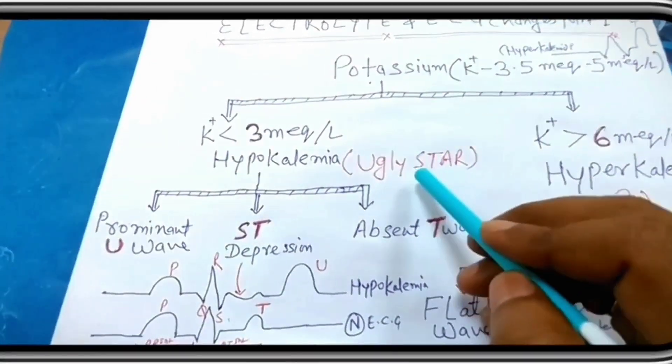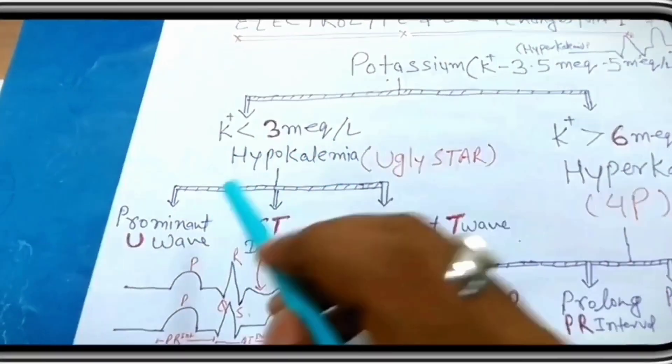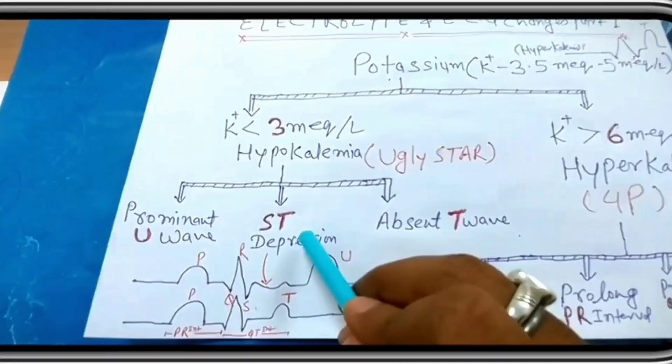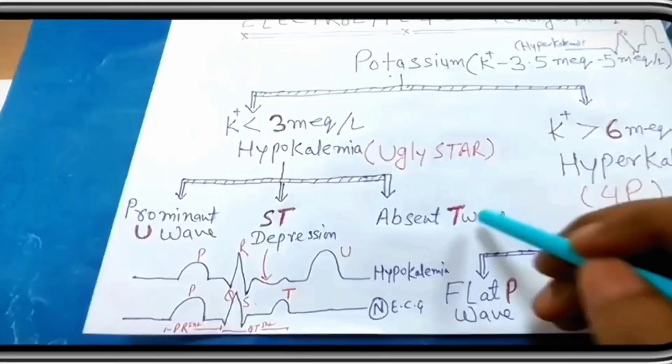And hypokalemia ECG changes remember by ugly STAR. UGLY means prominent U wave, ST depression, and T is absent T wave.